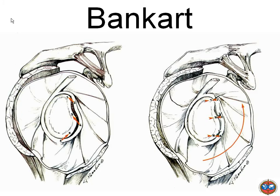A Bankart lesion is a rupture of the capsule and of the ligaments in the anterior and inferior part of the glenohumeral joint. The anatomy of this region is special. When you open the joint in an open way you can see the capsule, but it is pretty difficult to see the glenohumeral ligaments and make individual assessment of them. When you go inside the joint with a scope, it becomes obvious that the capsule is reinforced with the ligaments.